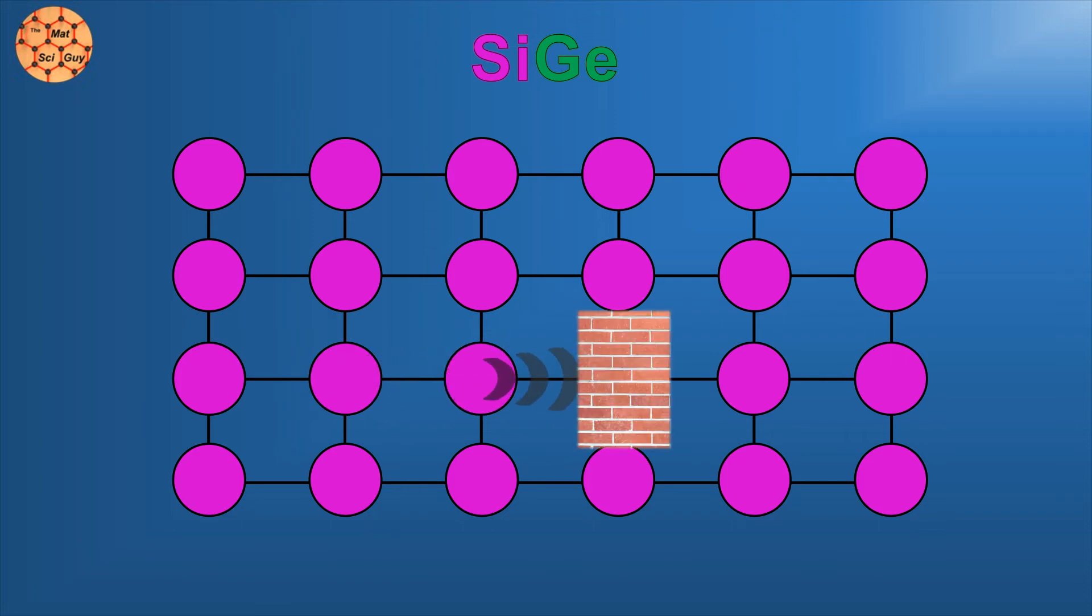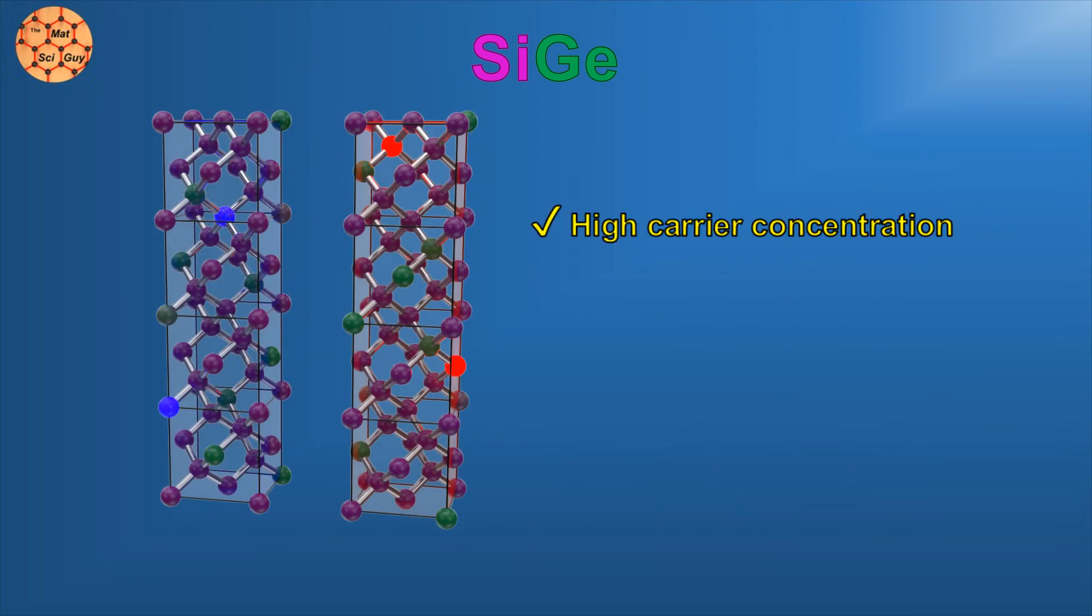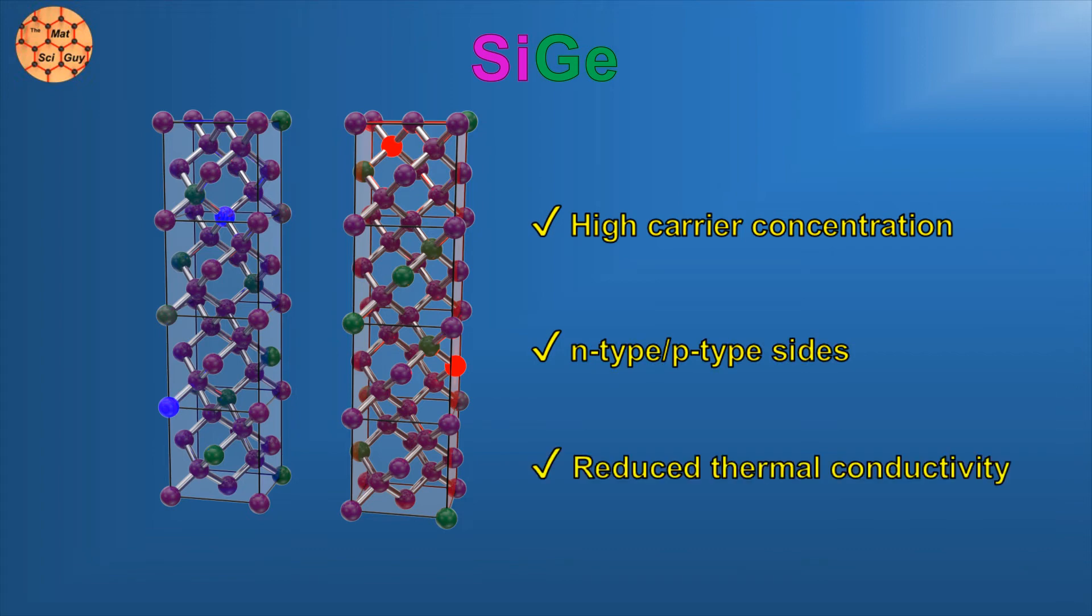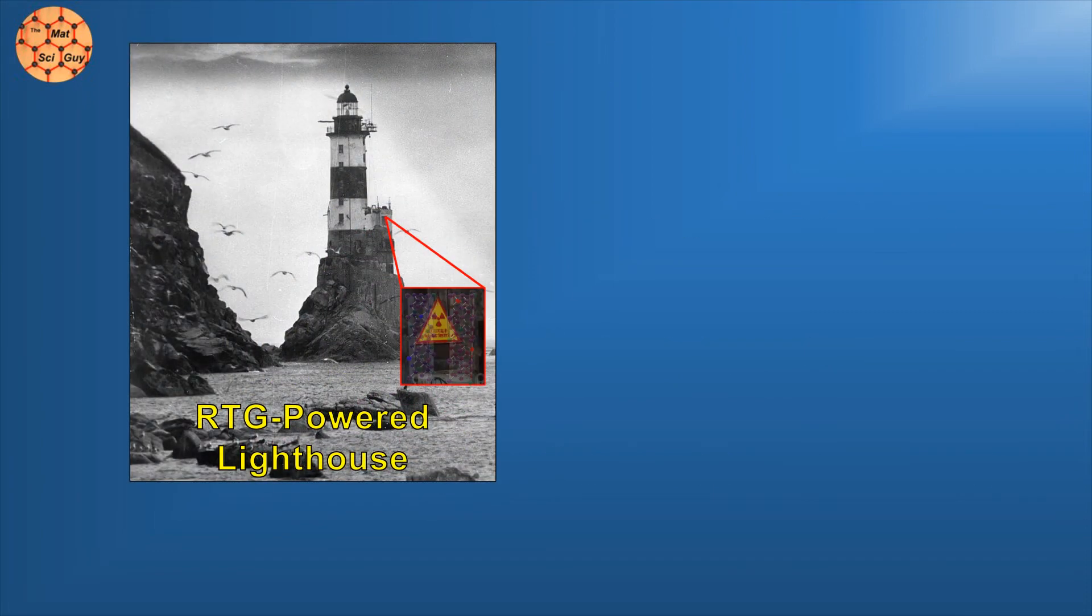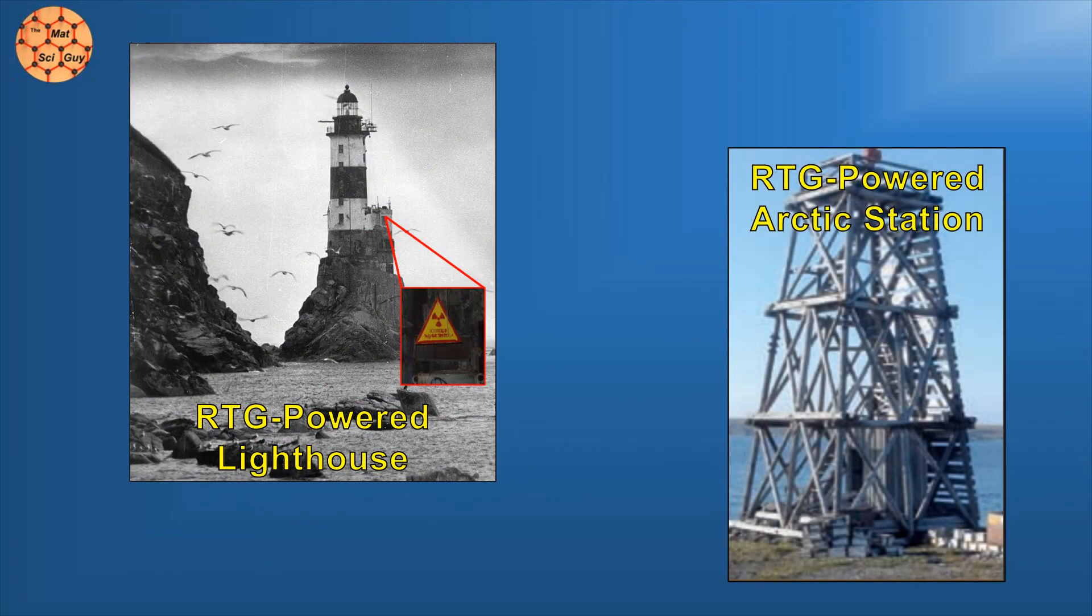The overall result is that we now have everything we could want in a thermoelectric material. The high carrier concentration, complementary p-type and n-type sides, and reduced thermal conductivity. To most of us here on Earth, these thermoelectric properties are pretty inconsequential. Aside from a few extremely niche applications, there almost always are better ways of producing power.